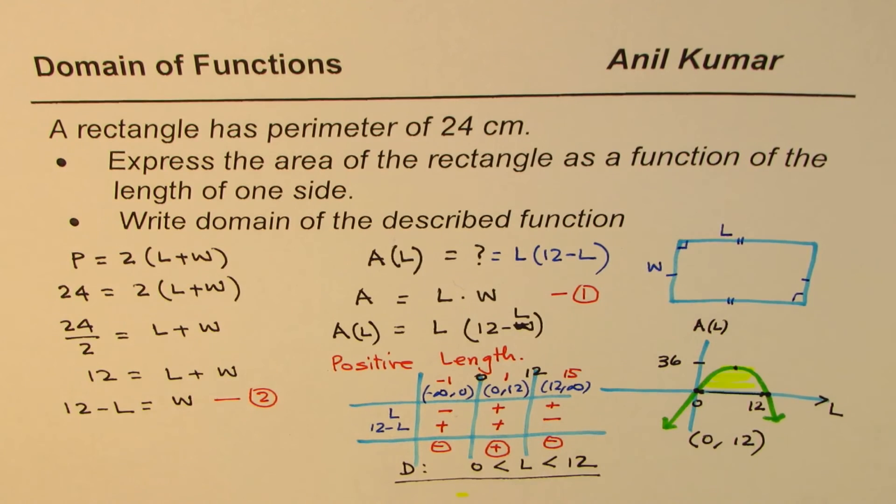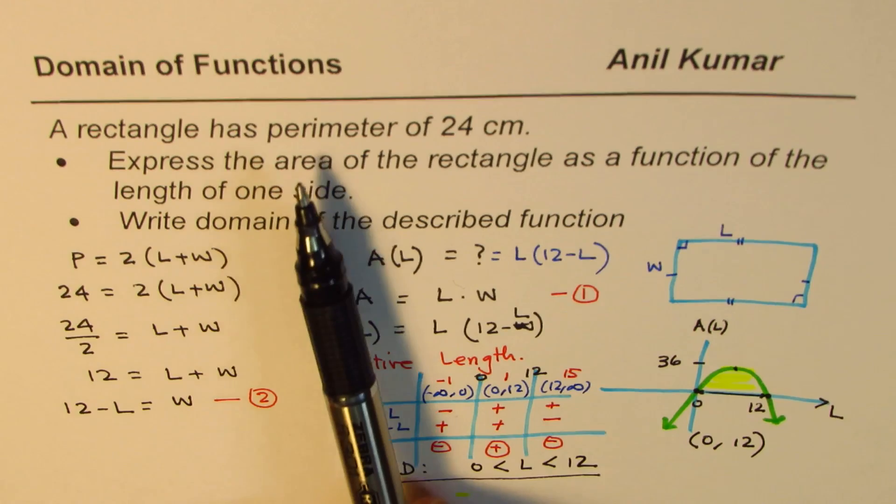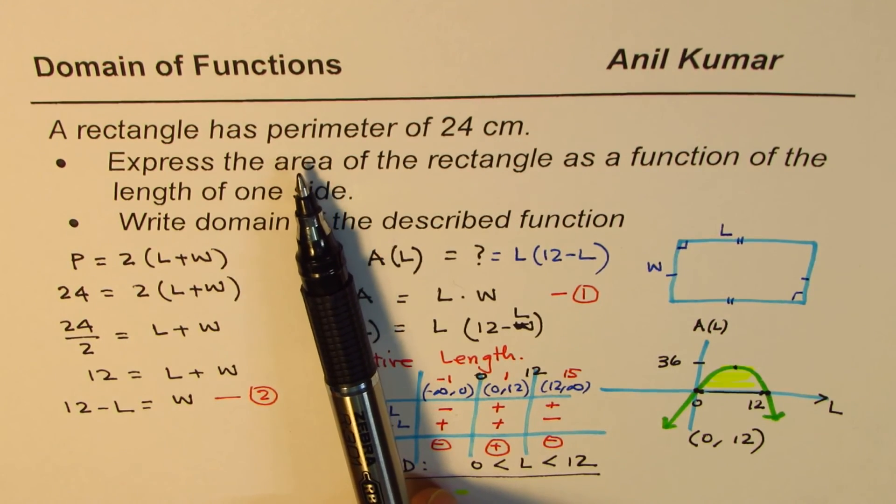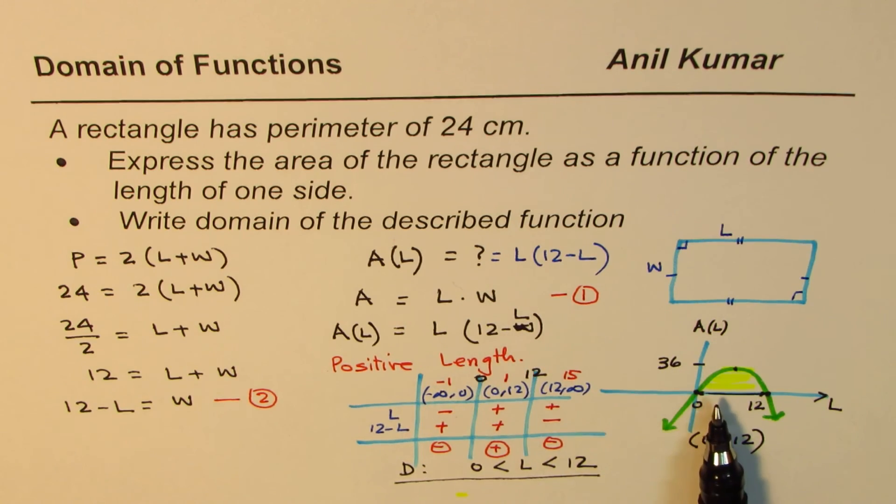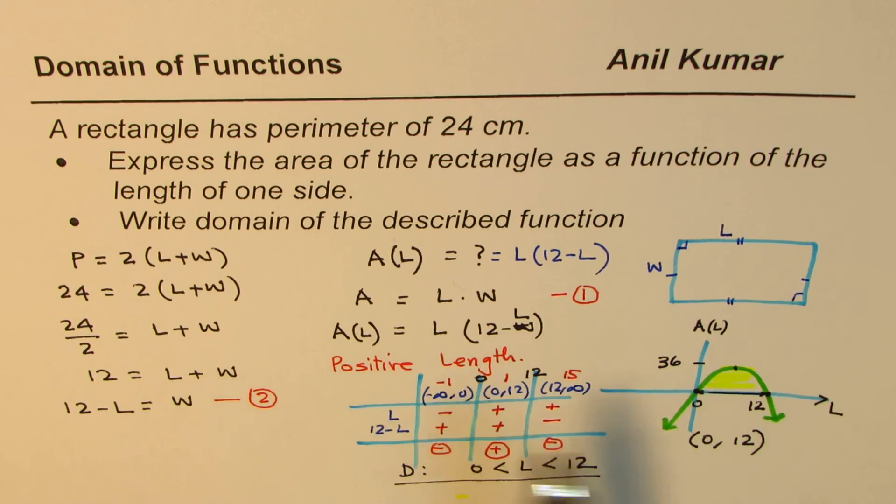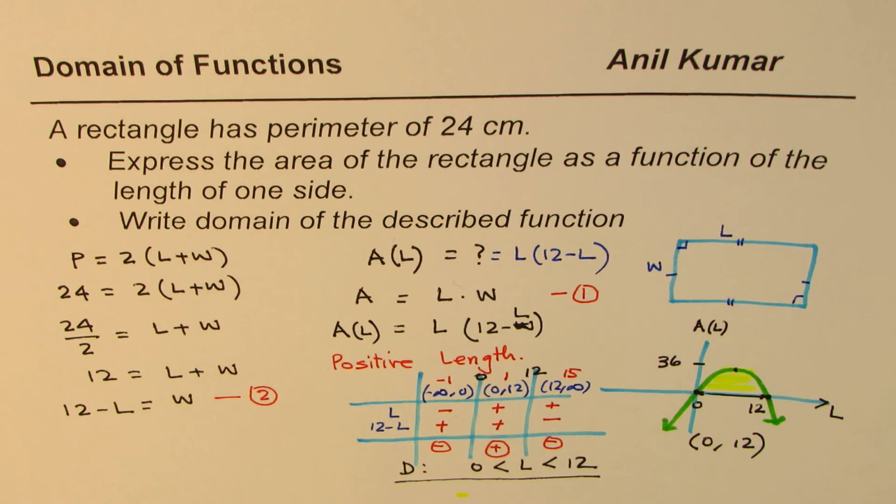So I hope both these methods are absolutely clear. And in doing so, we started from a word description. We created an equation, and we also represented that equation in the form of a graph. And you could always put some data for the same, the possible values of length and width. I'm Anil Kumar, and I hope you find this video interesting and informative about how to find domain of functions which are described in words. Thank you and all the best.